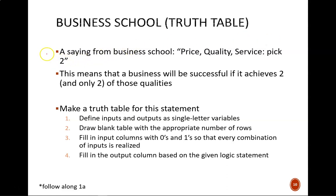Okay, first situation. A saying I learned in business school was this: price, quality, service, pick two. This means that a business will be successful if it achieves two and only two of those qualities. Why not all three? Because that's impossible. For example, you can't keep your prices low if you maintain high quality products and excellent customer service.